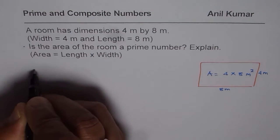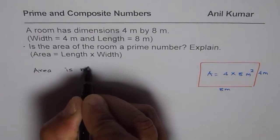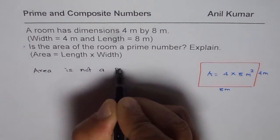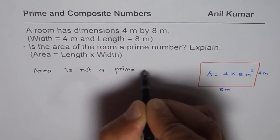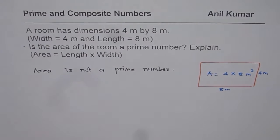So, in this case, we can safely write that area is not a prime number.